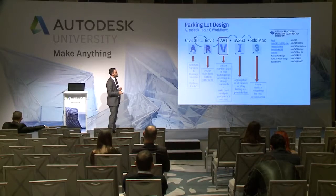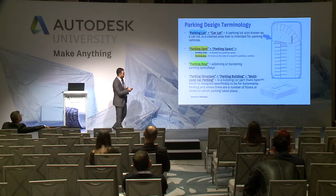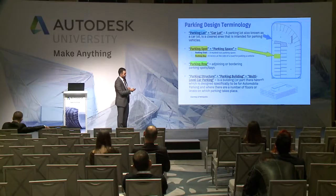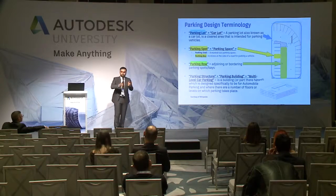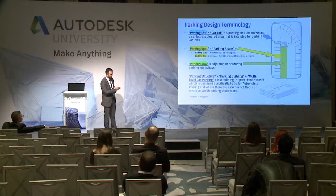Before talking about the parking design layout, here's the basic terminology. A parking lot is the whole area or piece of land you want to design. A parking spot is one individual space. A parking row is any number of parking spots that are interconnected. And a parking structure is a building — usually multi-story, above ground or underground — made specifically for parking vehicles.